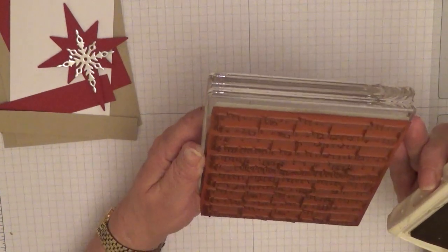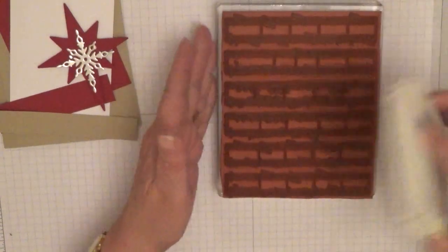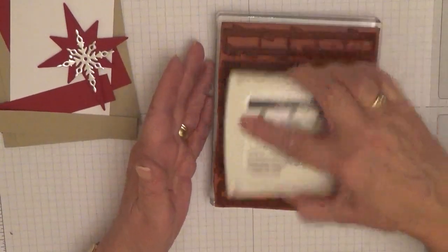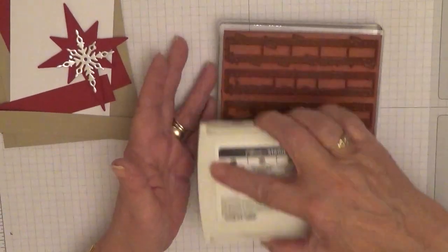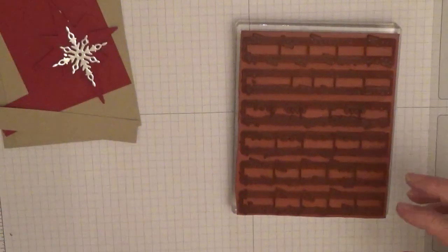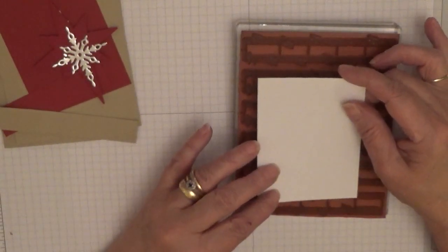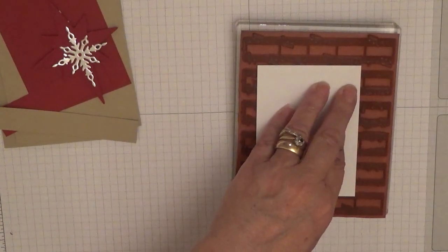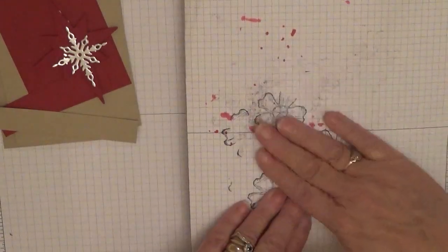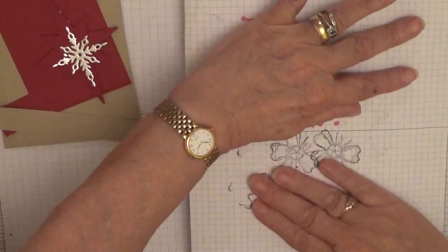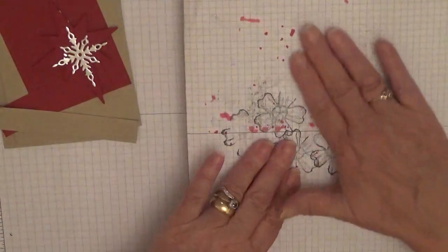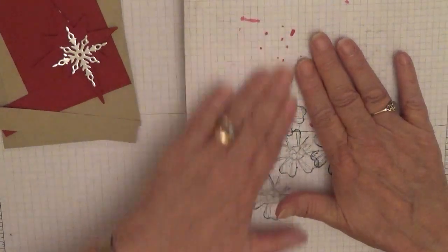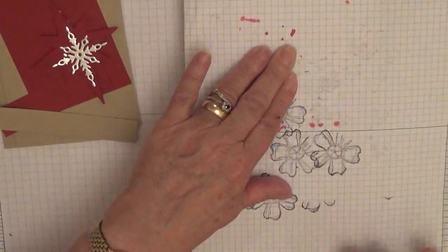That must be up the right way. Right, I think that's inked enough. And with my white piece of card, I will lay it down. It's not very straight. And with a scrap paper, I will give it a rub. I can't see if I'm rubbing the right bit, but...